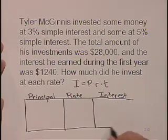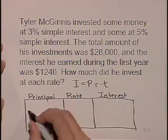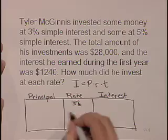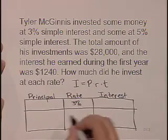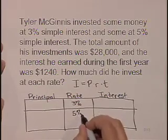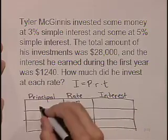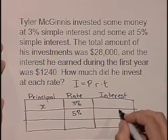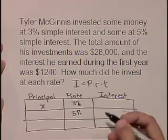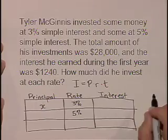We have some money which is at 3%, and we have another amount of money that's at 5%. We're going to let X be the amount of money that's at 3%. Since there's $28,000 total in the account,